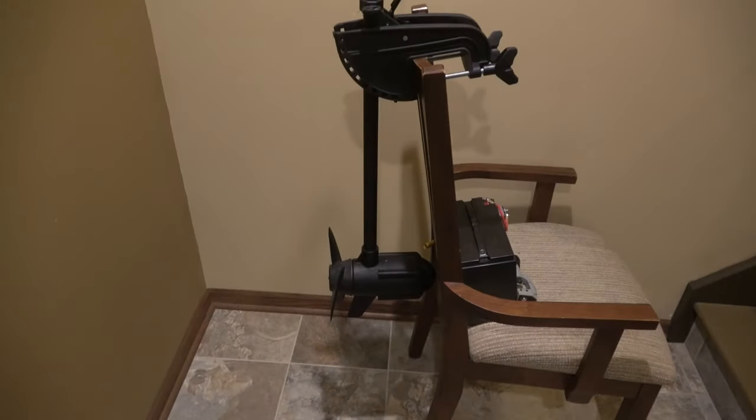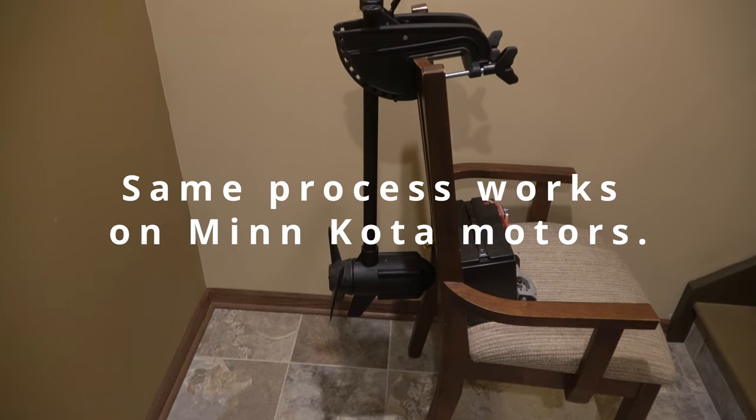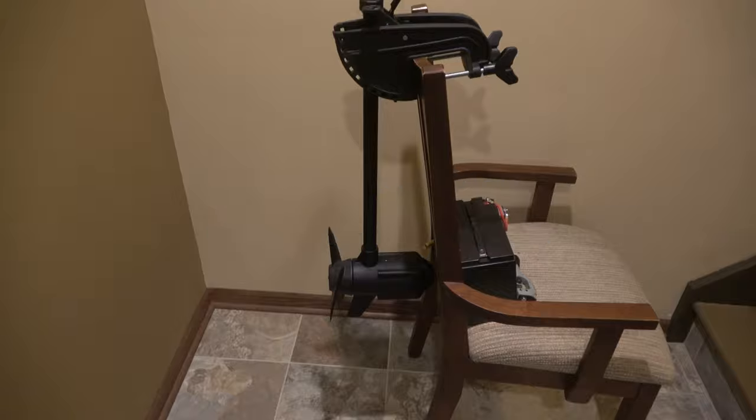Hey everyone, Bassman Strikes here. What we're going to do now is shorten the shaft on this Haswing 65 pound thrust 12 volt motor. We're going to short it down to 26 inches for use on a kayak and a stern mount.